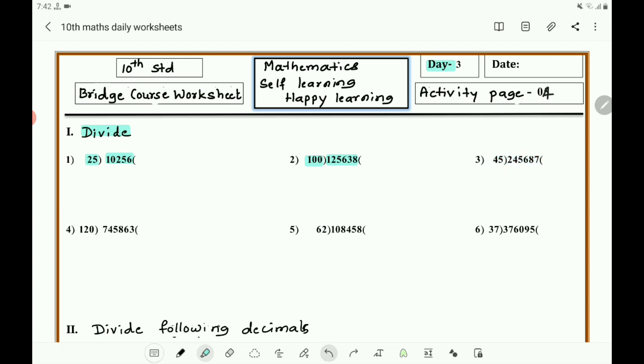Divide 2,45,687 by 45 and divide 7,45,863 by 120. Then divide 1,28,458 by 62 and divide 3,76,090 by 37.